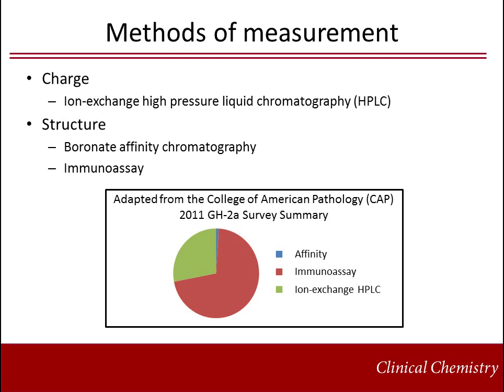It should also be mentioned that hemoglobin A1C point-of-care analyzers are available; however, they are not sufficiently accurate or precise enough at this time to be used for diagnosis of diabetes and should not be used for this purpose. Data from the CAP glycohemoglobin proficiency testing survey shows the distributions of methodologies used for measuring hemoglobin A1C. The ADA recommends that all laboratories performing testing participate in the CAP accuracy-based proficiency testing survey for hemoglobin A1C, which uses fresh, whole-blood samples.